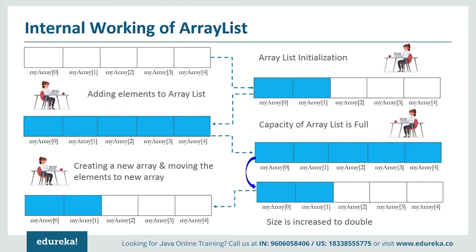First, we create an empty array and then go on adding elements. Once the size of the array is full — that is, if the size of current elements is greater than the maximum size of the array — then we have to increase the size. But the size of the array cannot be increased dynamically. So what happens internally is a new array is created and the old array is copied to the new array, automatically doubling the size. So you can go on adding as many elements as you require.